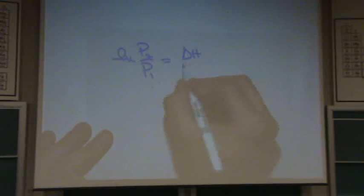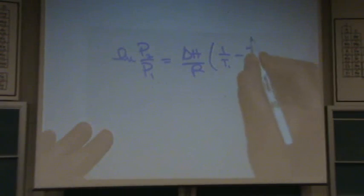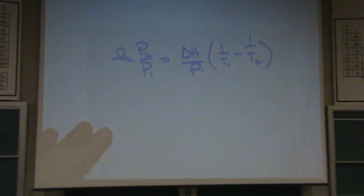So it's the natural log of the P's, the pressures, really vapor pressures, is change in enthalpy over R, 1 over T1 minus, if I have this right, 1 over T2.